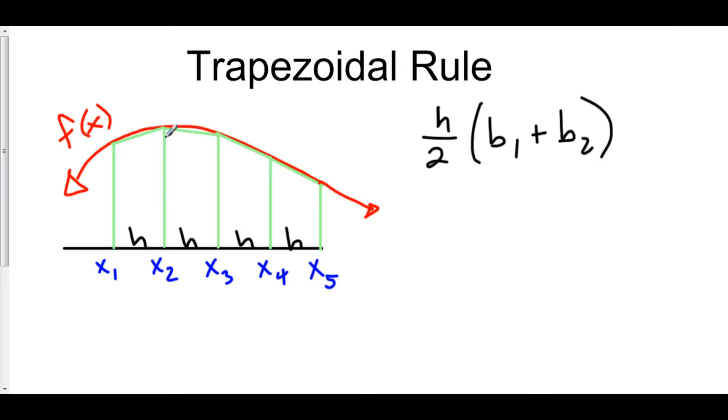So for example, if I were looking at the area of this trapezoid right here, the very first one, I would have this h, the width, divided by 2 times f of x1, because that's my first length, plus f of x2. And that would be the first trapezoid.